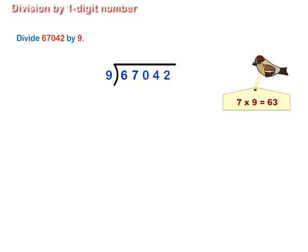Divide 67 by 9. Speak or write table of 9 till you get the product just less than or equal to 67. As 7 multiplied by 9 is equal to 63, so 9 divides 67 seven times. Write 7 at the top and 63 below 67 and subtract.